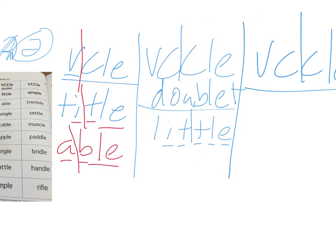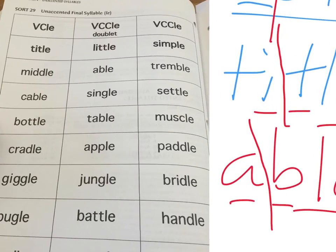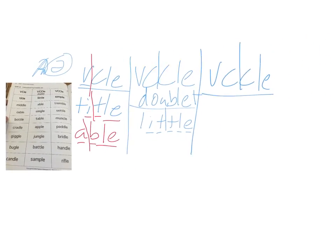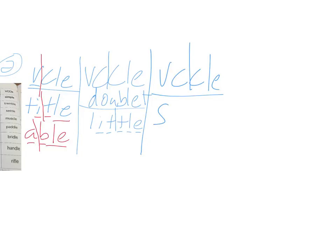So these are the ones that are like simple, simple. So S-I-M-P-L-E. That would go over here with your syllable juncture coming between the P and the M. Vowel, consonant, consonant, L-E. Simple.